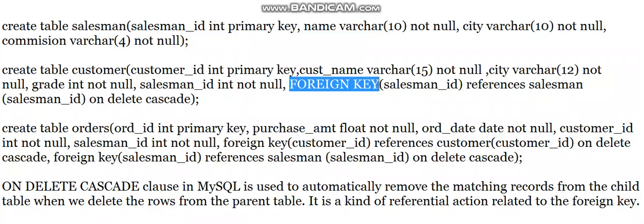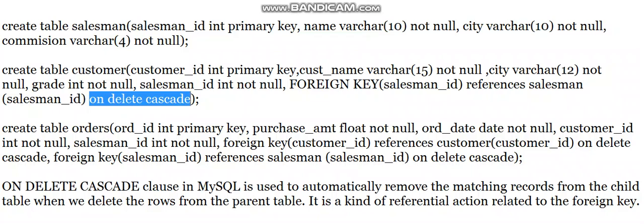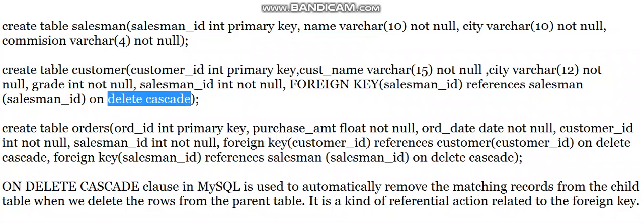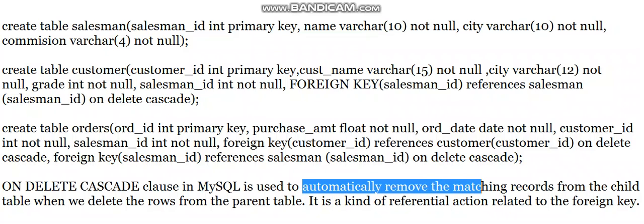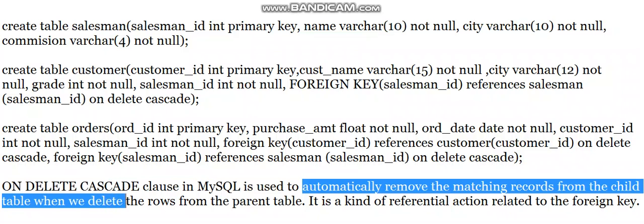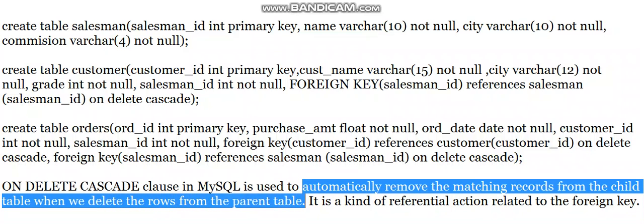I am also adding the ON DELETE CASCADE clause, which is an important addition compared to our first lab program. ON DELETE CASCADE automatically removes matching records from the child table when a row is deleted from the parent table. So if a salesman is deleted, the corresponding customer records are also deleted automatically from the customer table.